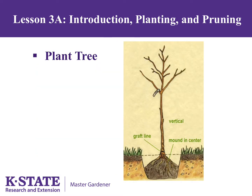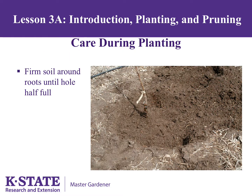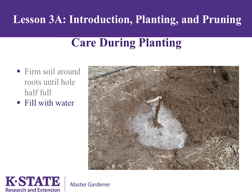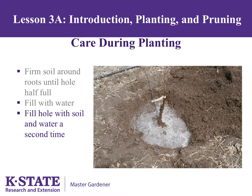It is a good idea to mound soil in the center of the hole so the tree sits on that mound. Plant the tree several inches high and bring the soil up to the point where the roots flare. This will keep the tree from being too deep, even if the mound settles. Add soil to the hole until it is about half full, then fill with water so the soil settles around the roots, ensuring good root-soil contact and avoiding air pockets. Finish filling the hole with soil and add water a second time. Make sure the tree is set several inches above the soil line. If it is too deep, simply pull up on the tree before watering in.